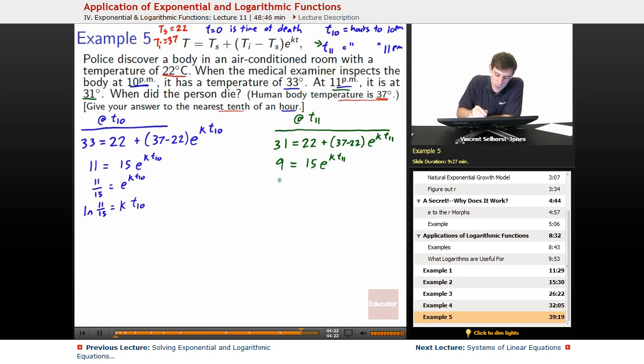We can divide by the 15, so we get 9 over 15 equals e to the k T11. Take the natural log of both sides, natural log of 9 over 15 equals k T11. Shoot! We've got once again two unknowns, one equation. And between all of them, we've got k, T10, T11. That's three unknowns, two equations. We need some other piece of information that will connect these things together.